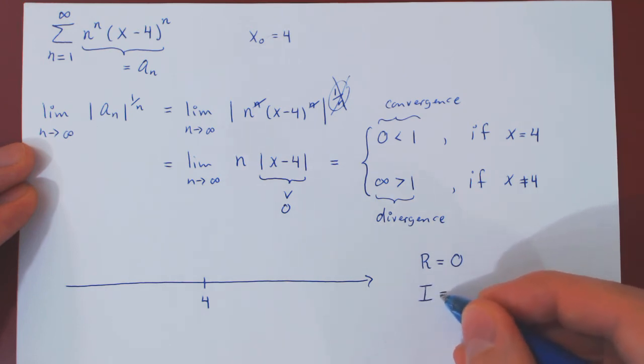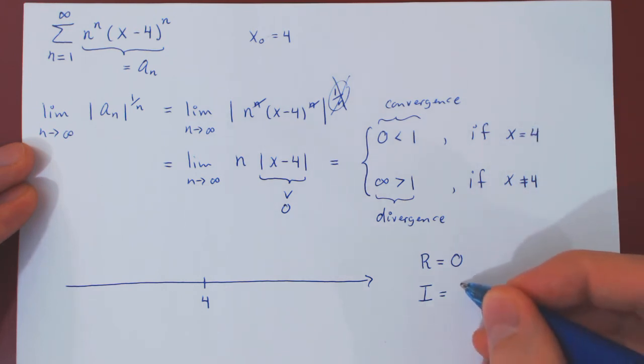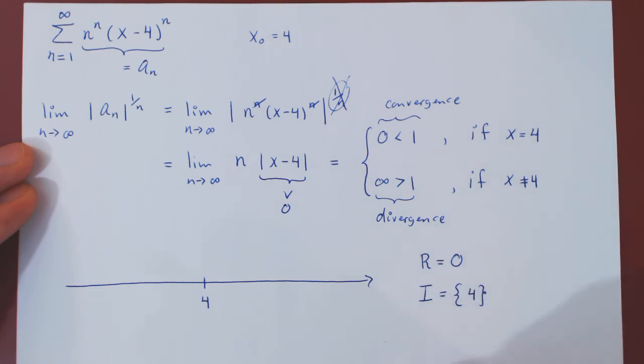And the interval of convergence is supposed to contain all values of x for which the series converges. Well, this includes a single value of x being 4, so the interval is a singleton, namely, the set that contains the real number 4, and that's it.